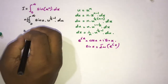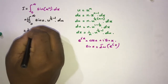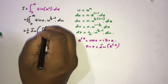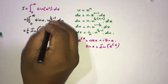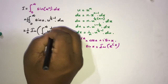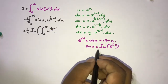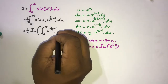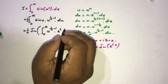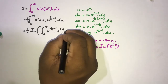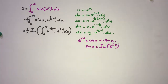So we can write the integral as 1 over n times the imaginary part of the integral from 0 to infinity of u to the (1 over n minus 1) times e to the iu du.